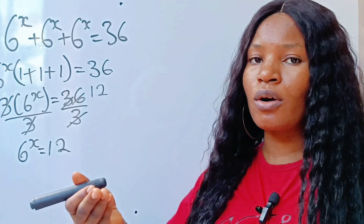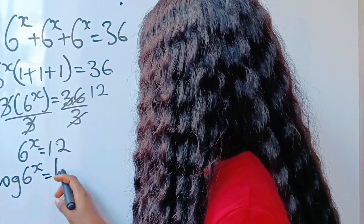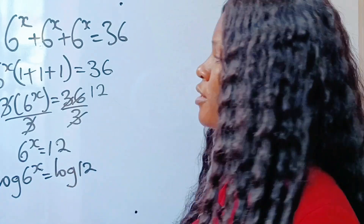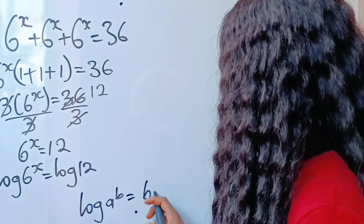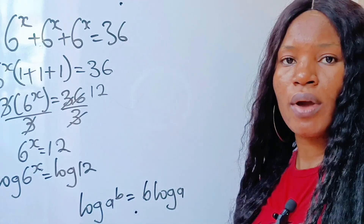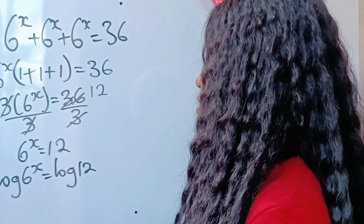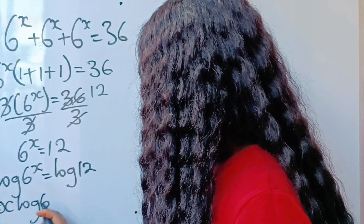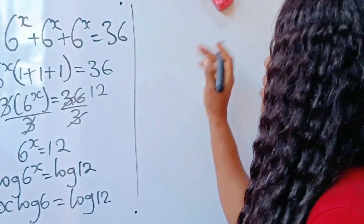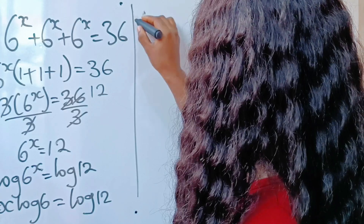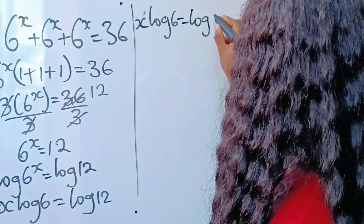We need to introduce log to both sides of the equation. So if we do that, we have log of 6 to the power of x is equal to log 12. Now, according to the power rule, log A raised to the power of B is the same thing as B multiplied by log A. So applying that law here, we can write this as x multiplied by log 6 is equal to log 12.